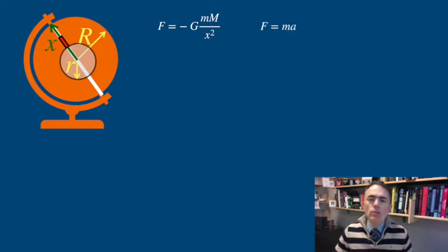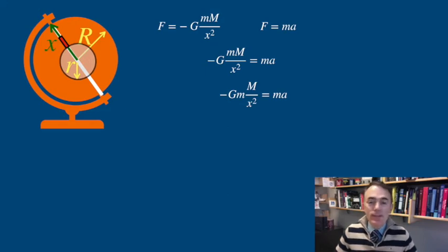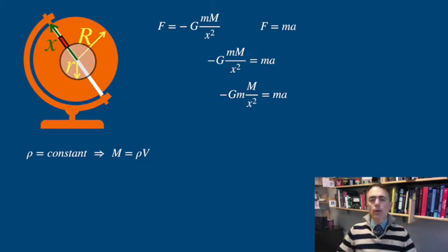Lowercase m is the mass of the transport and capital M is the mass of the sphere below the transport. Now I will write Newton's second law: force equal to mass of the transport times its acceleration, and equal both equations. Now is when you might want to re-watch the previous video on the gravitational force of the earth as a function of the depth at which you are. For simplicity I will assume that the density of the earth is constant, which you know it is not, but you can complicate the problem later. If the density of the planet is constant, then the mass can be written as density times volume.